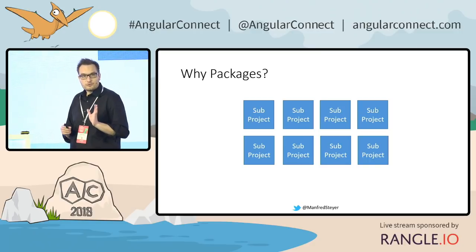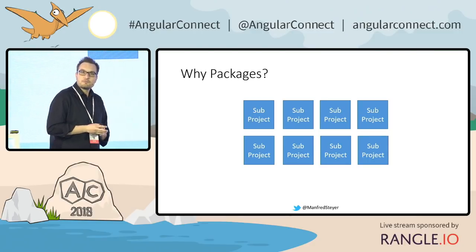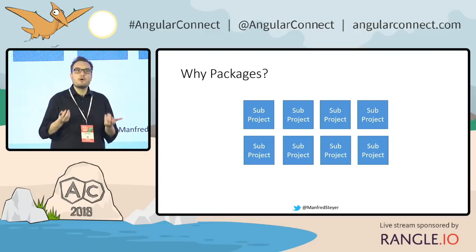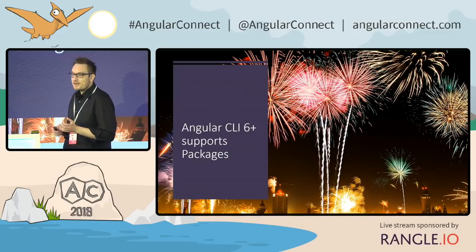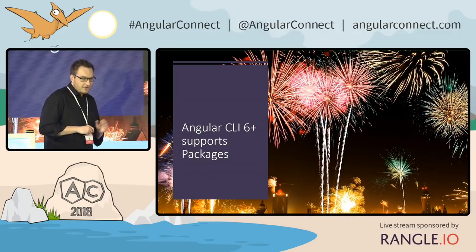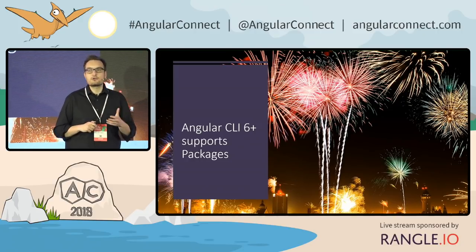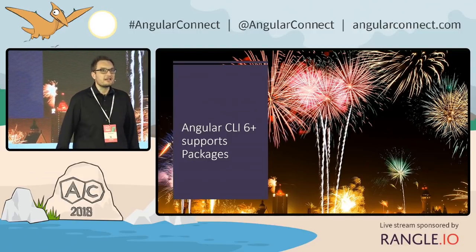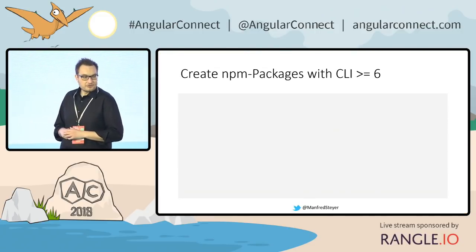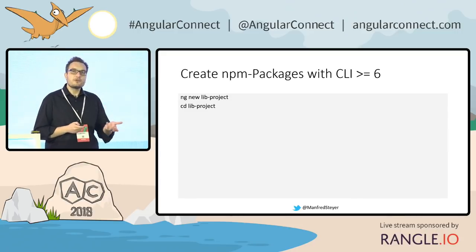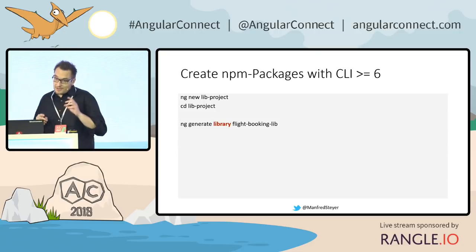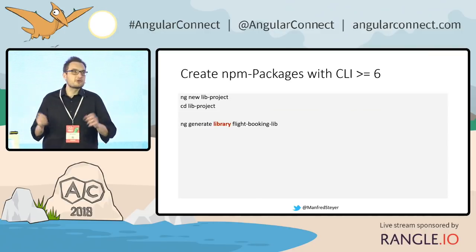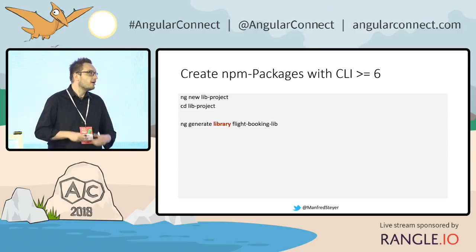The idea behind NPM packages is to subdivide a big system into tiny parts, where each part could be an NPM package installed on demand and integrated into your overall architecture. Since about six months ago, creating NPM packages has been built into the CLI. Using CLI 6 and above, it's really easy. Everything you do is create a new project, and then you can create a subproject — for instance, a flight booking library that cares about a specific use case in your overall application.